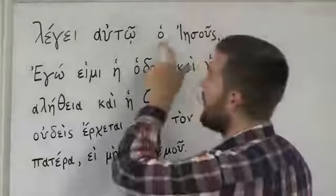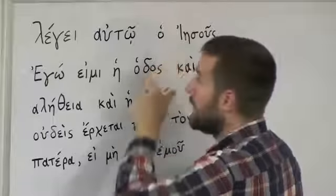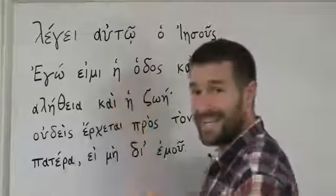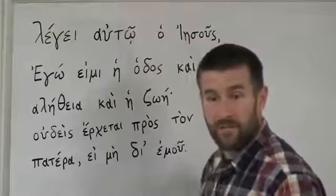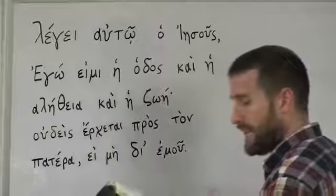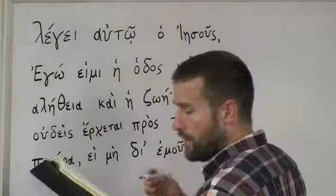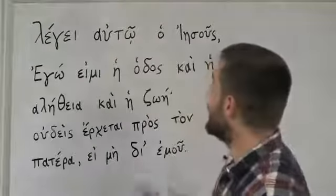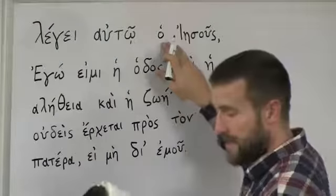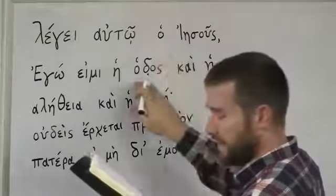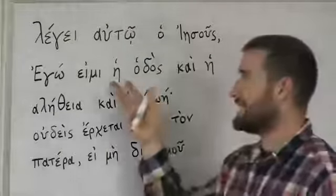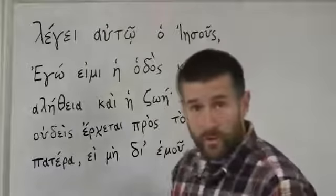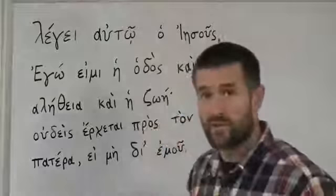You'll notice that the word 'the' in front of Iēsous is 'ho,' but the word 'the' in front of hodos is 'hē' — two different letters. That's because Greek has grammatical gender: masculine, feminine, or neuter. Iēsous is a masculine word, and hodos is a feminine word, so they get different forms of the article 'the.' We're using modern Greek pronunciation, so we ignore the breathing marks, which are no longer pronounced.